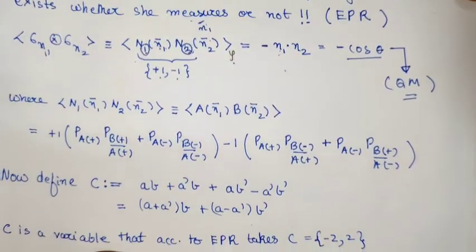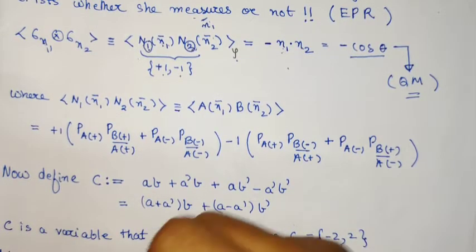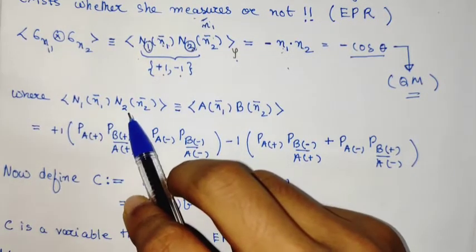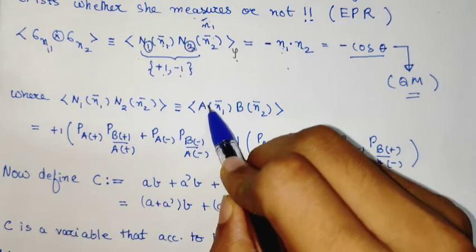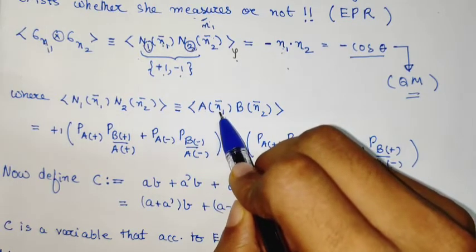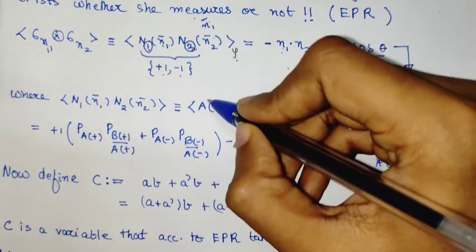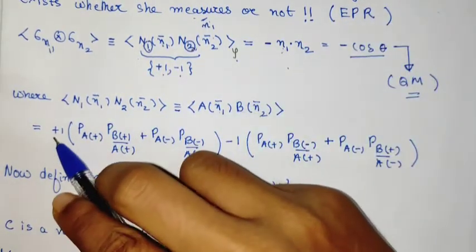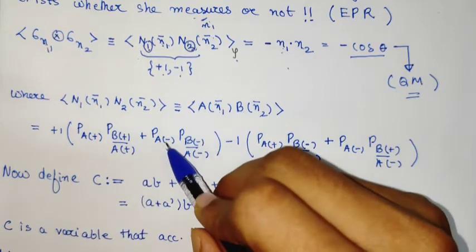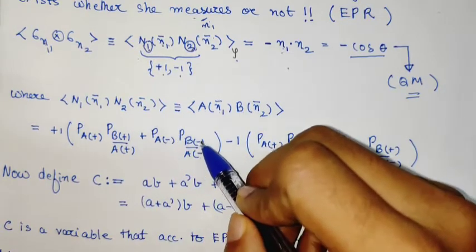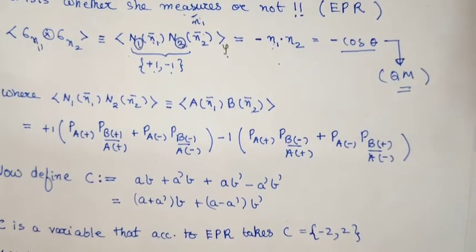This expectation value is essentially Alice's measurement along N₁ and Bob's measurement along N₂. This entire value is +1 when either Alice gets +1 and Bob gets +1, or Alice gets -1 and Bob gets -1. It's -1 when they get opposite values. We have seen this already.